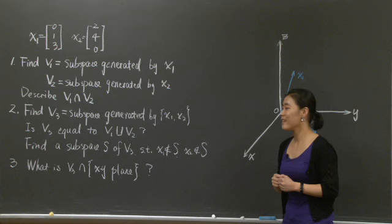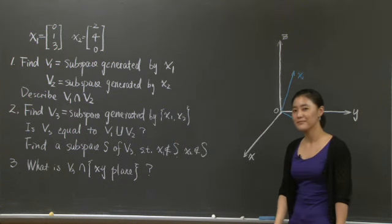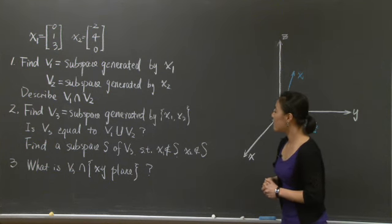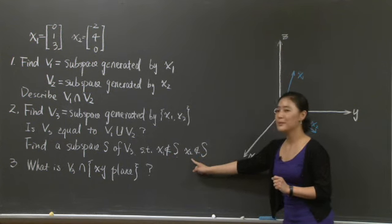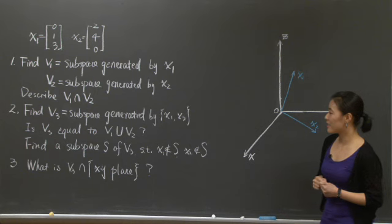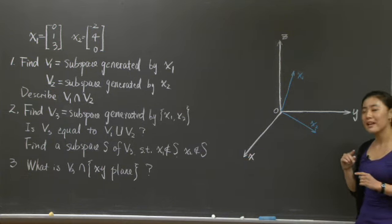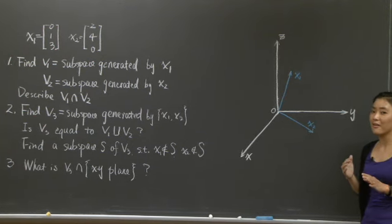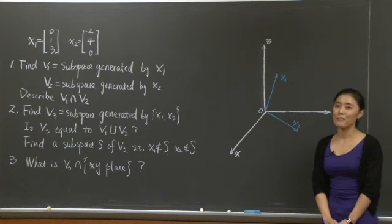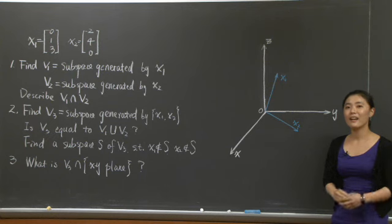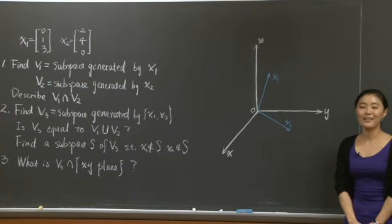A good question to be asked here is: what is the relation of v3 to v1 union v2? Do you think they're equal? Within the second question, I would also like you to find a subspace, call it S of v3, such that neither x1 nor x2 is in S. And the last question is: say something about the intersection of v3 with the xy plane. Notice that the xy plane is also a subspace of R3, so we're looking at the intersection of two subspaces. Why don't you hit pause now and try to solve these three problems on your own.